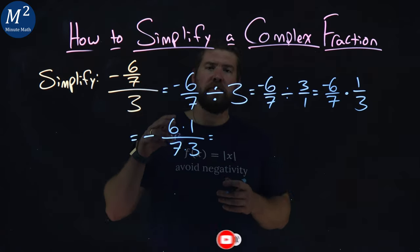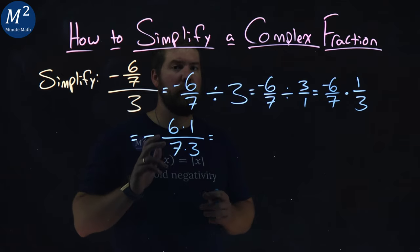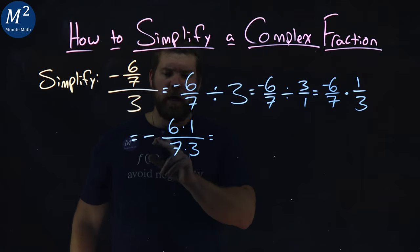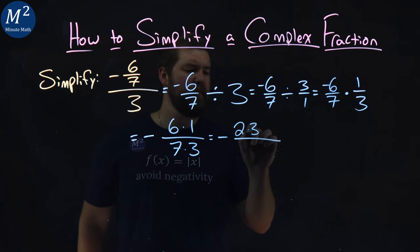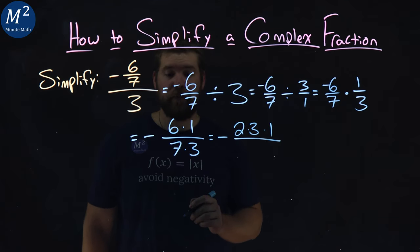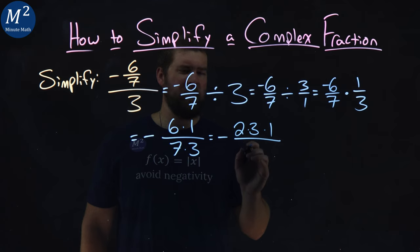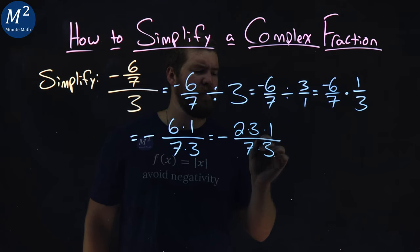I'm now going to break down what we can of each number here. Factor this. Negative stays out here, but six is two times three, and we have times one left over still. Seven and three don't break down, so we have seven times three.